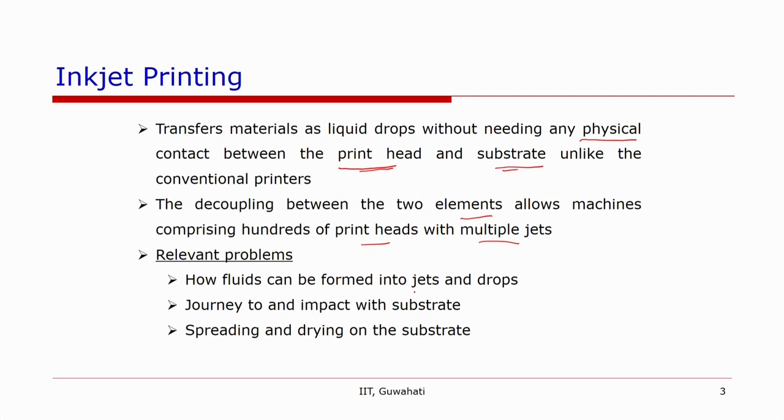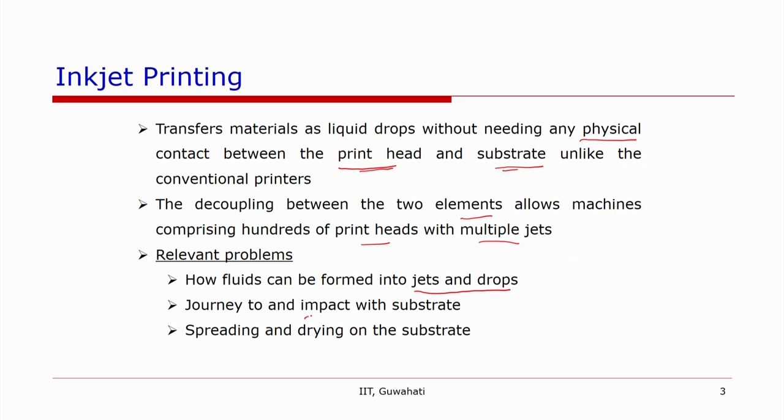The three categories are: first, the generation of jets and droplets — in continuous inkjet printing, jets form and droplets are generated from them. Second, the travel of the droplet: its travel path, whether it is to be deposited or discarded, and the time between successive droplets. Third, from the print head to the substrate — the journey of the droplets — then their spreading on the surface, interaction with adjacent droplets, and finally the drying of the substrate.